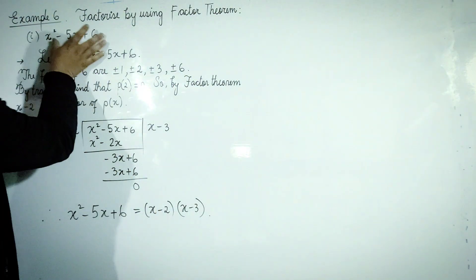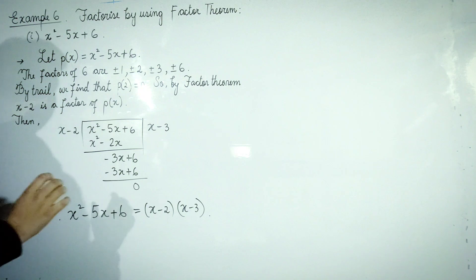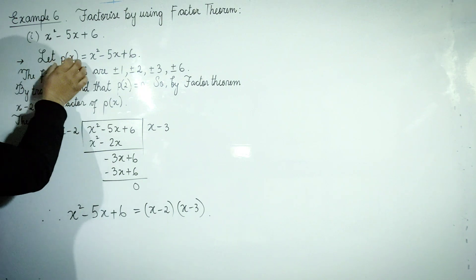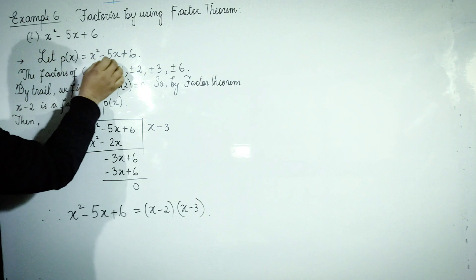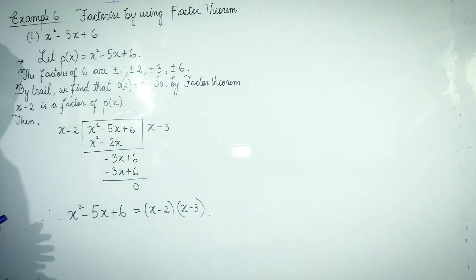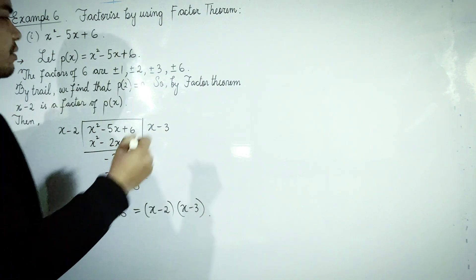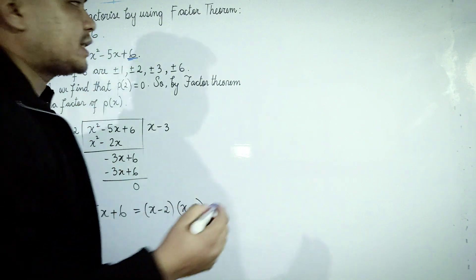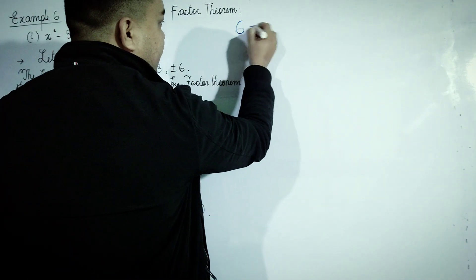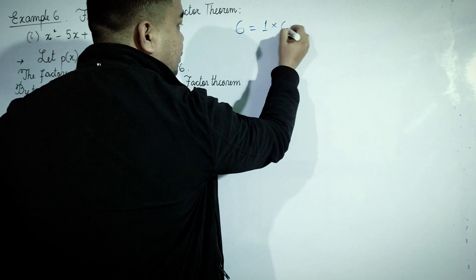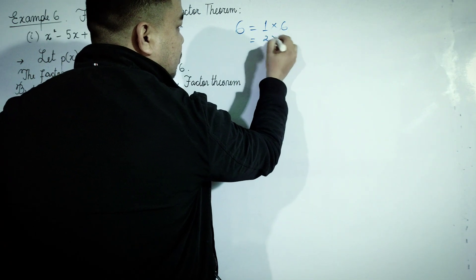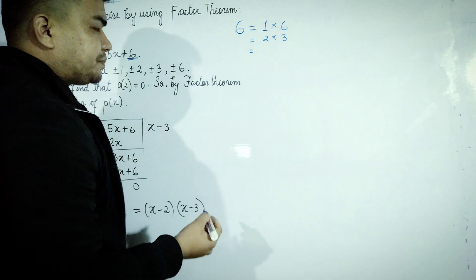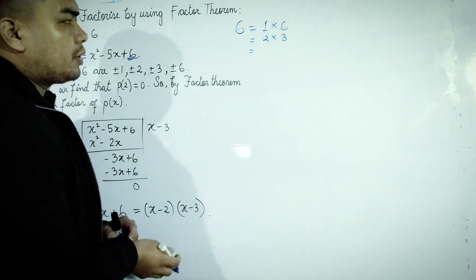In this case, we have P(x) = x² - 5x + 6. P(x) is x² - 5x + 6. The constant is 6.